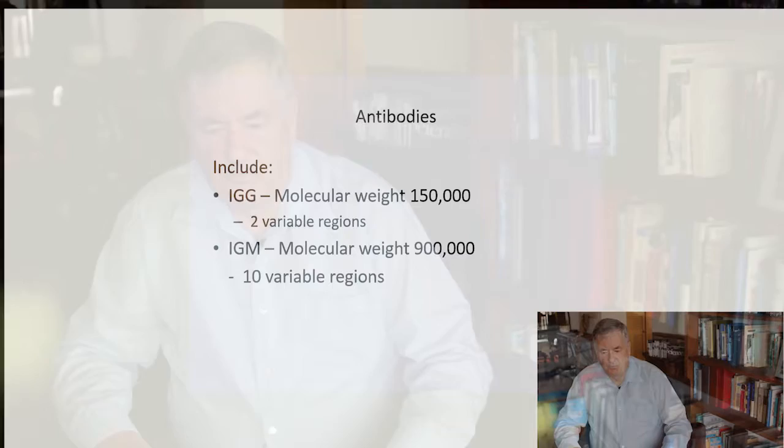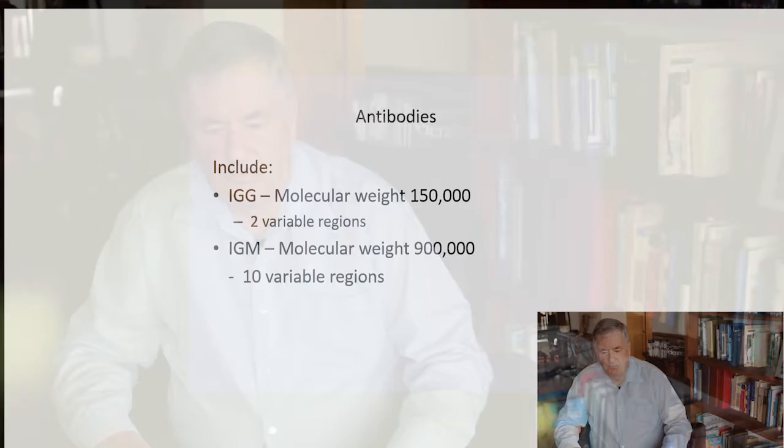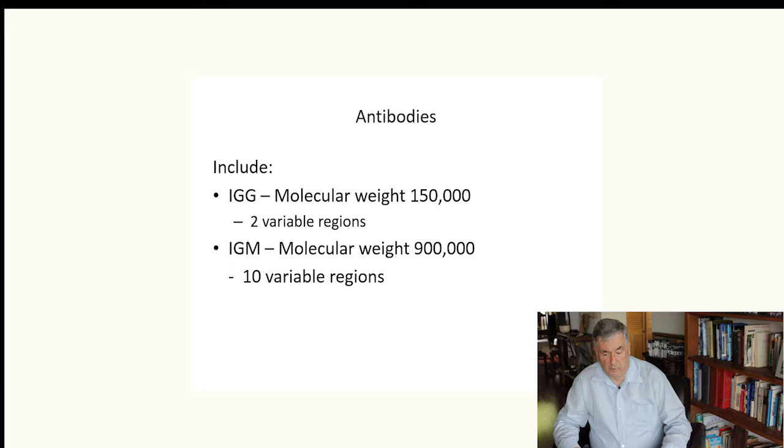Antibodies include IgG which has a molecular weight of about 150,000. It has two variable regions. IgM with a molecular weight of about 900,000 has 10 variable regions.